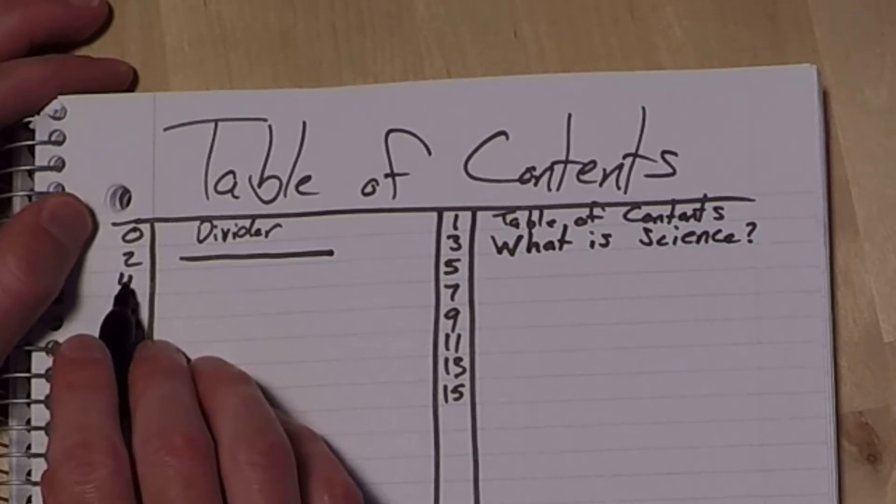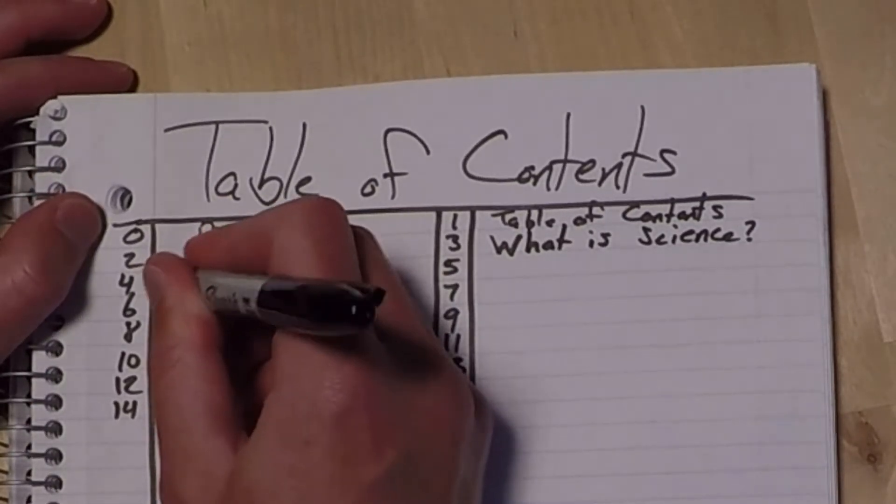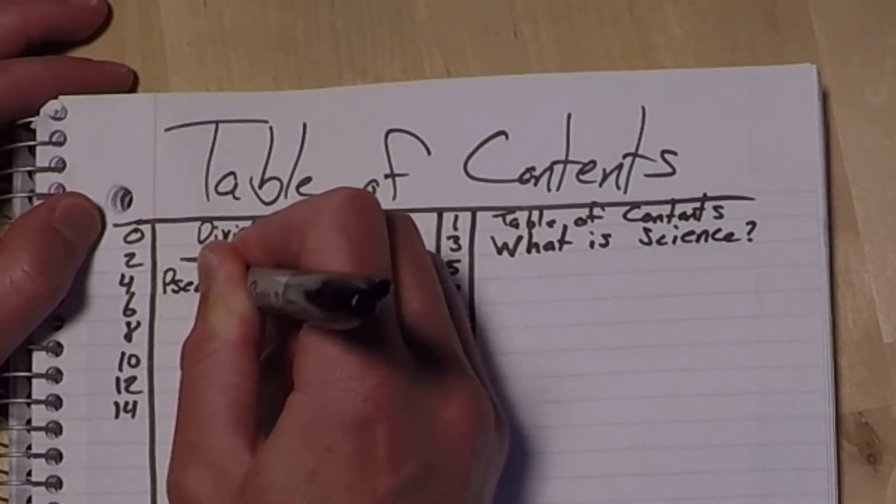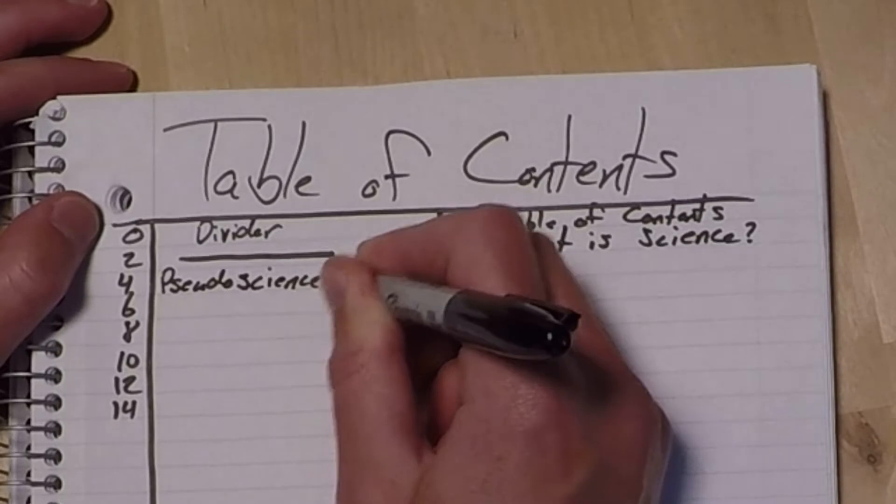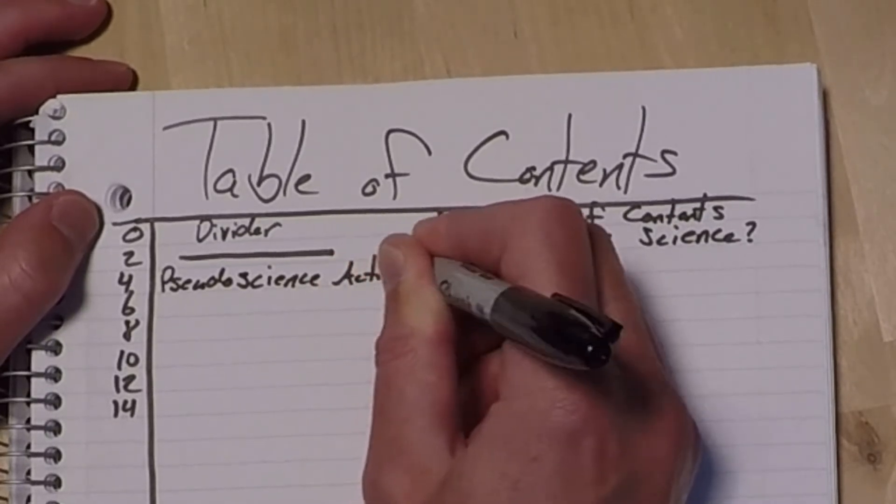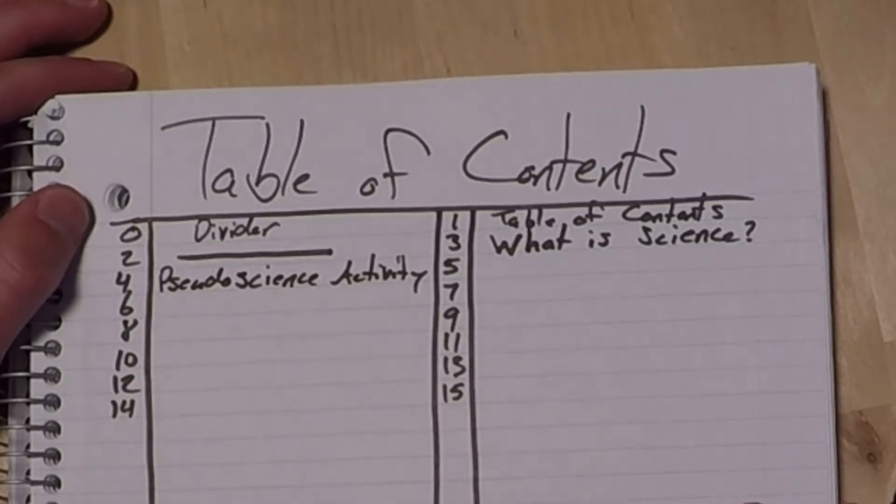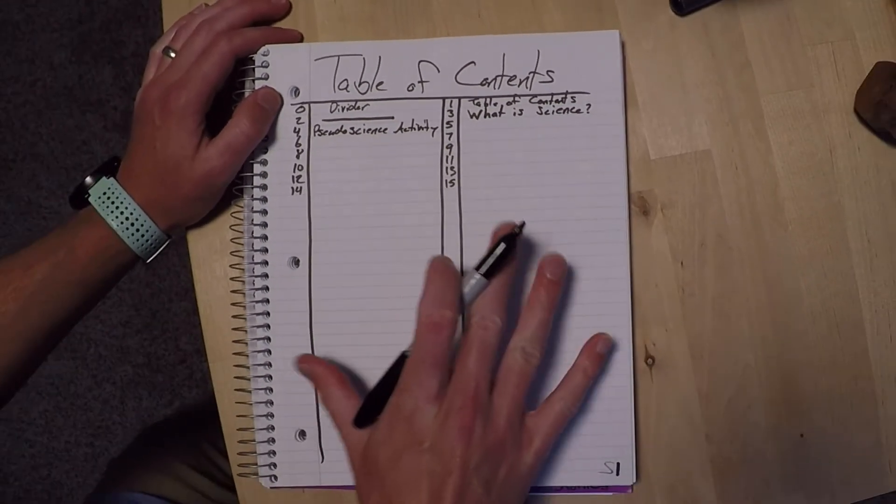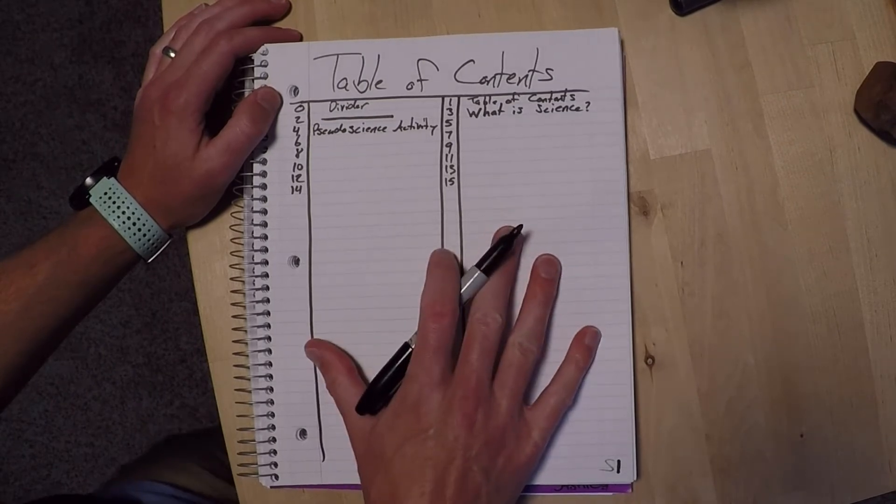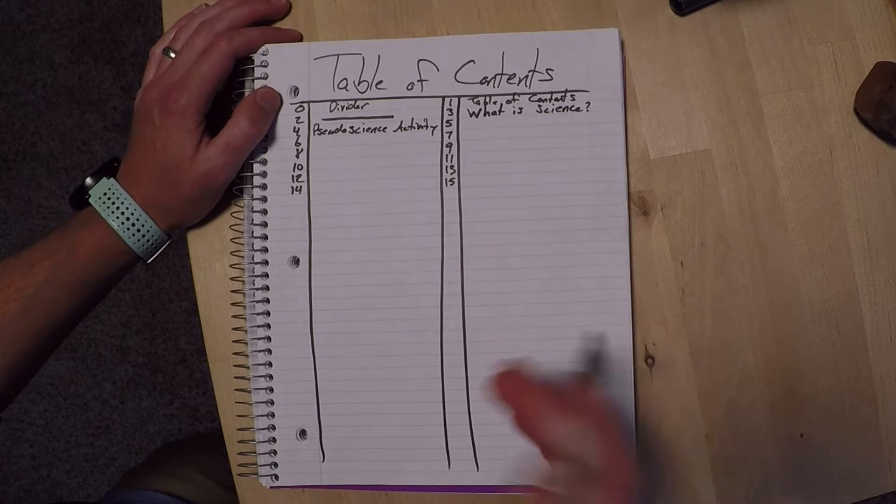And then four is our first activity or lab. And that's going to be pseudoscience activity. So those are the first couple things that we're going to do. But this is going to fill up. And this is going to be very helpful for later on, especially when we're studying, or doing worksheets or anything like that.